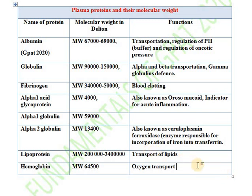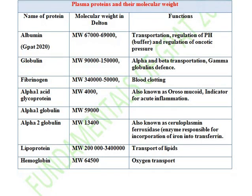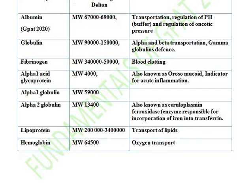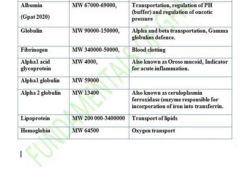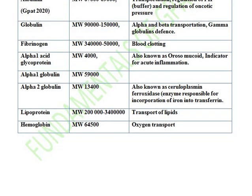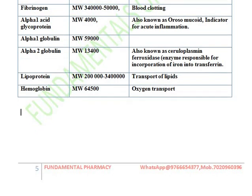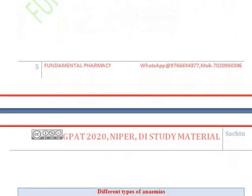These are the examples of plasma proteins and their molecular weight. Last year they asked the molecular weight of albumin in GPAT 2020. They might ask any plasma protein from the table next year, so you must read these tables thoroughly.